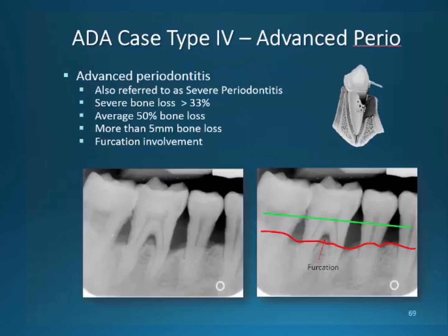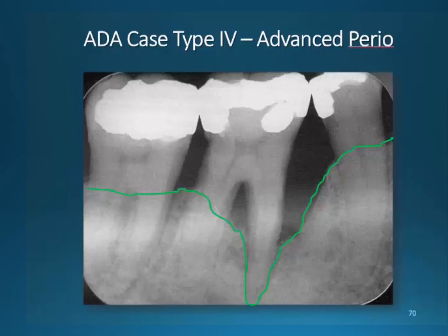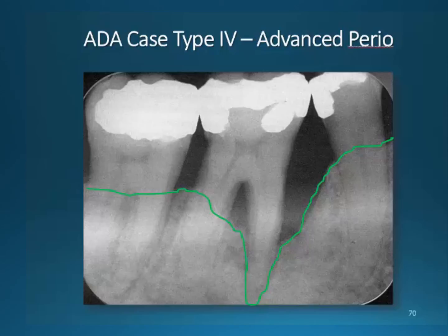Our last classification was advanced, which used to be called severe. Bone loss has increased over 30% in this stage. Probing depths are now reading 5 millimeters or more. Furcation involvement is commonly seen and obvious. Calculus may or may not be present. Notice I have drawn the bone loss to include the apex of this tooth so you would notice changes in the PDL involved. This tooth has little to no bone attachment on the mesial root. There exists both severe vertical bone loss and calculus is present. The calculus is actually lining the edge of the mesial root on this tooth.